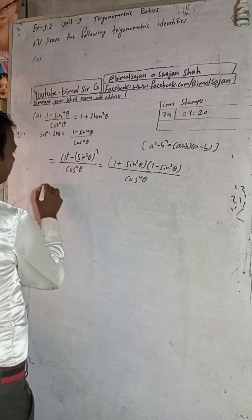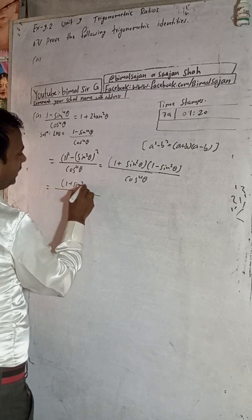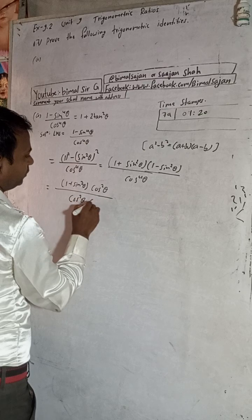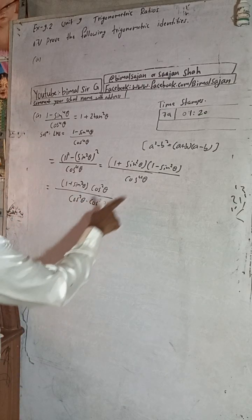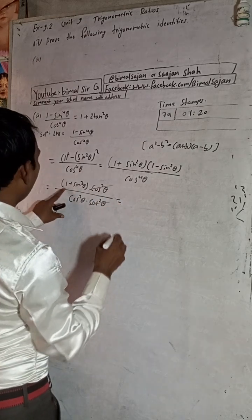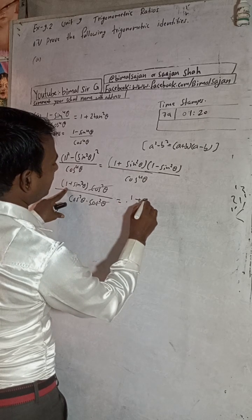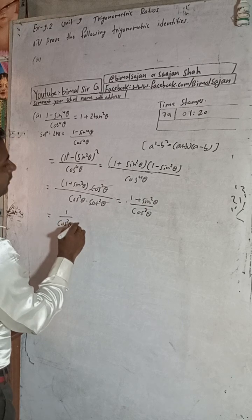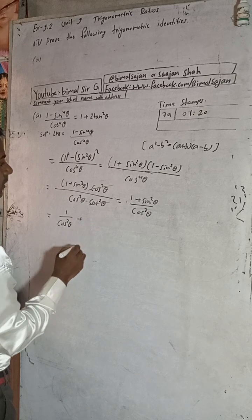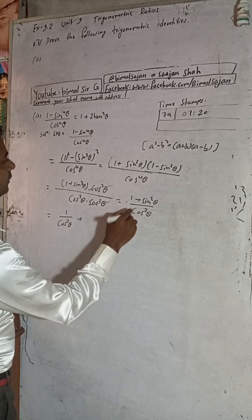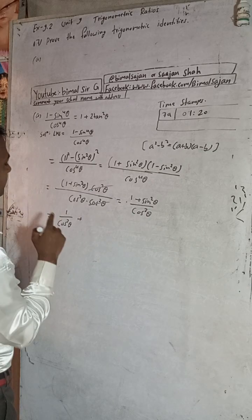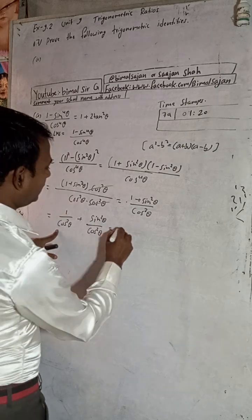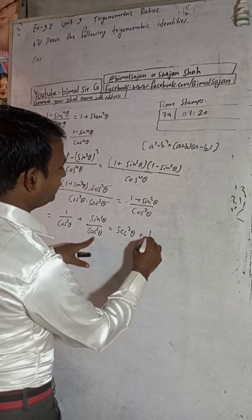Now, 1 minus sine square theta equals cos square theta. And cos to the power 4 theta can be written as cos square theta into cos square theta. So cos square theta cancels. We can write this further as: (1 plus sin²θ) divided by cos²θ, which is 1/cos²θ plus sin²θ/cos²θ — that is sec²θ plus tan²θ.